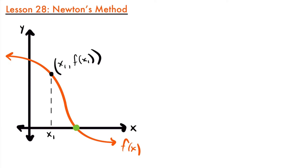If we look at this function, we want to approximate this x-intercept, this little green dot here. We start by picking some value that we believe is close to the x-value of where that x-intercept is. We have x1 labeled here, which is a point on the x-axis a little bit away from our actual x-intercept. Newton's method is based on the assumption that the tangent line at that point is going to cross the x-axis at the same point as the function.